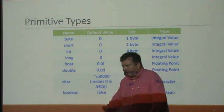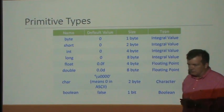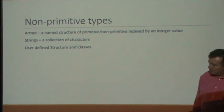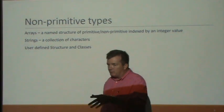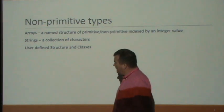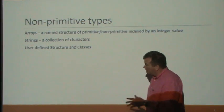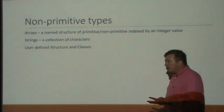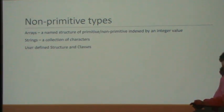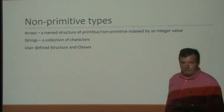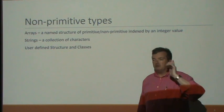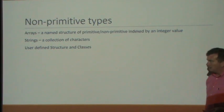If you say 'I need a character,' it'll reserve two bytes for you. Non-primitive types are things you the programmer have to define yourself — arrays, a string (which is really a collection of characters), user-defined structures, and what we're really talking about today: classes. Primitive means the programming language defines it for you; non-primitive means you have to help tell the language how to define it.